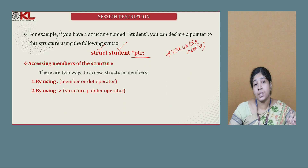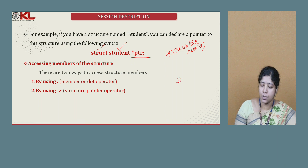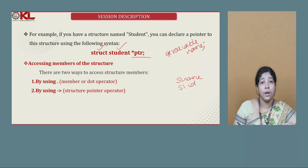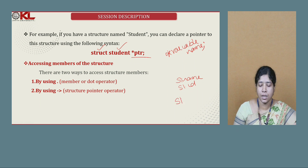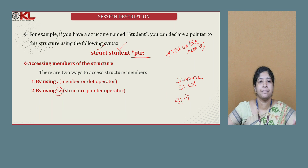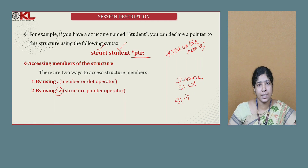How to access structure members? For structures in the previous session, we used the dot operator — for example, S1.name, S1.id. Now, to access members through a pointer variable, you use the arrow operator: the structure pointer name, followed by a minus sign and greater-than symbol (->). This is the symbol used for structure pointers. We will now see how to declare, initialize, and access variables using structure pointers.